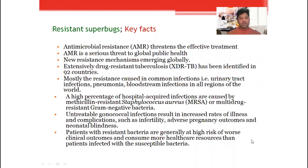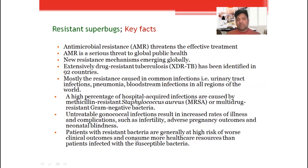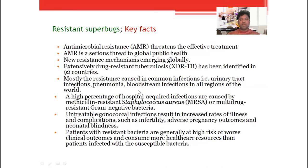Now I would like to talk about resistant superbugs — the key facts. Antimicrobial resistance is threatening effective treatment all over the world and is a serious threat to the global healthcare system. New resistance mechanisms are emerging globally. Extensive drug-resistant tuberculosis has been identified in about 92 countries. Persistence is commonly caused in infections like UTI, pneumonia, and bloodstream infections in all regions of the world. A high percentage of hospital-acquired infections are caused by methicillin-resistant Staphylococcus aureus or multi-drug resistant gram-negative bacteria. Untreated gonorrhea infections result in increased illness and complications such as infertility, adverse pregnancy outcomes, and neonatal blindness. Patients with resistant bacteria generally face worse clinical outcomes and consume more healthcare resources than patients infected with susceptible bacteria.